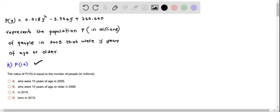Let's find p of 10. This can be found by replacing y equal to 10 in the population equation. So when I do that I get p of 10 equals 0.018 times y square which is 10 square minus 3.564 times y.